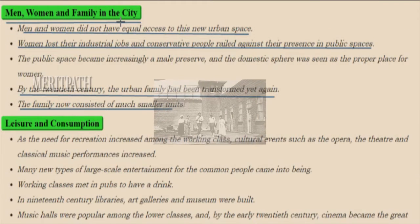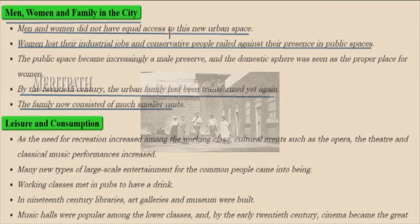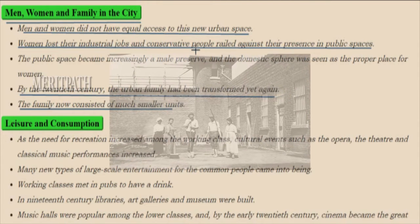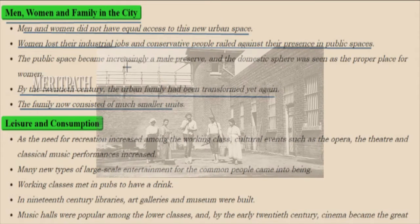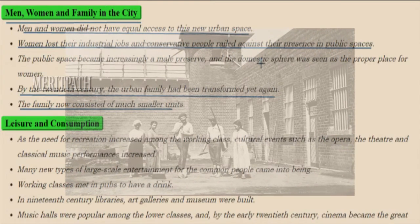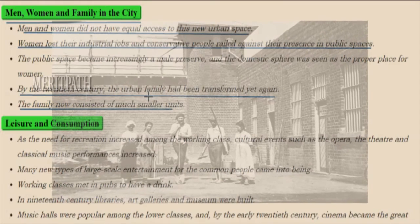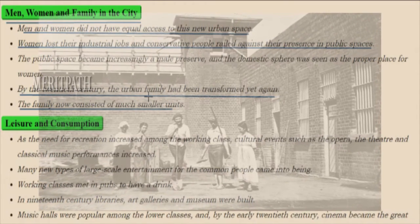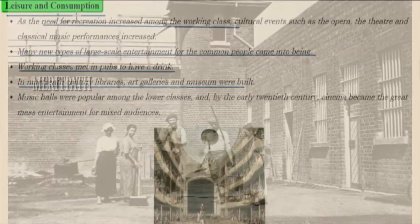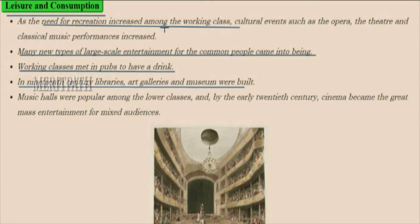Men and women did not have equal access to the new urban space. Women lost their industrial jobs, and conservative people railed against their presence in public spaces. Public space became increasingly a male preserve, and the domestic sphere was seen as the proper place for women. By the 20th century, the urban family was transformed again, now consisting of leisure and consumption. As the need for recreation increased among the working class, cultural events such as opera, theatre, and classical musical performances increased.